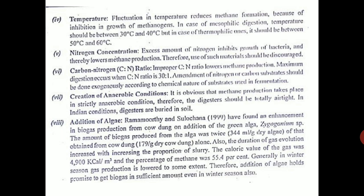Temperature is another important factor. In India there is a lot of variation in temperature, and that is one of the main problems. In developed countries where they have biogas plants, they are keeping the digester artificially warm, because below 30 degrees the formation of gas is reduced. They are artificially heating the digester. The ideal temperature is 35 degrees centigrade — the lower the temperature, the less the formation of gas.